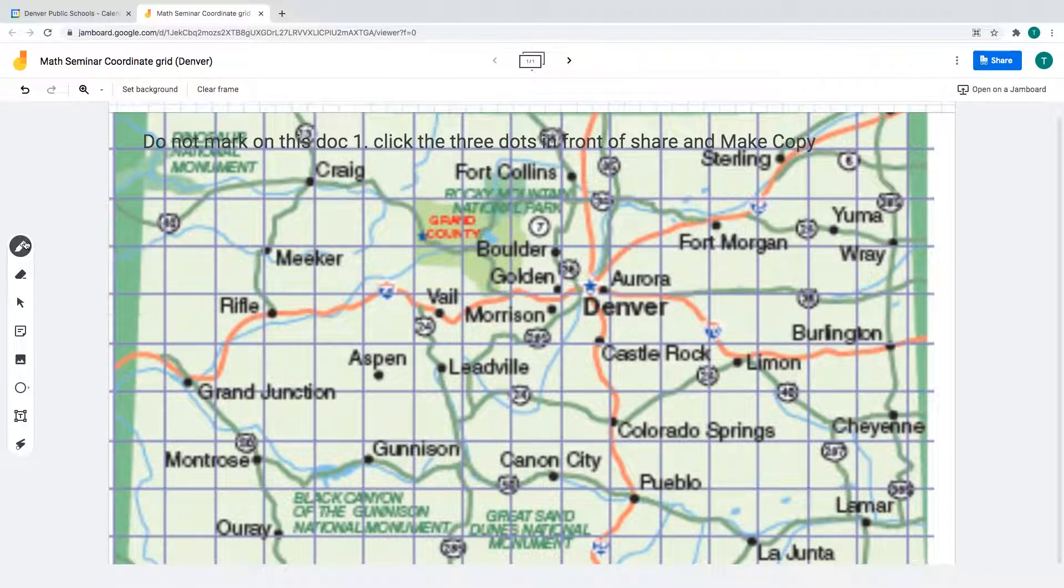We all agreed that this point here. One thing that we talked about when we read about the history of why the coordinate grid came about, we discovered that the creator always set the origin. So we decided to set the origin of Denver right here at that spot. And then, we need to give these coordinates actual coordinate points or ordered pairs to represent those points.